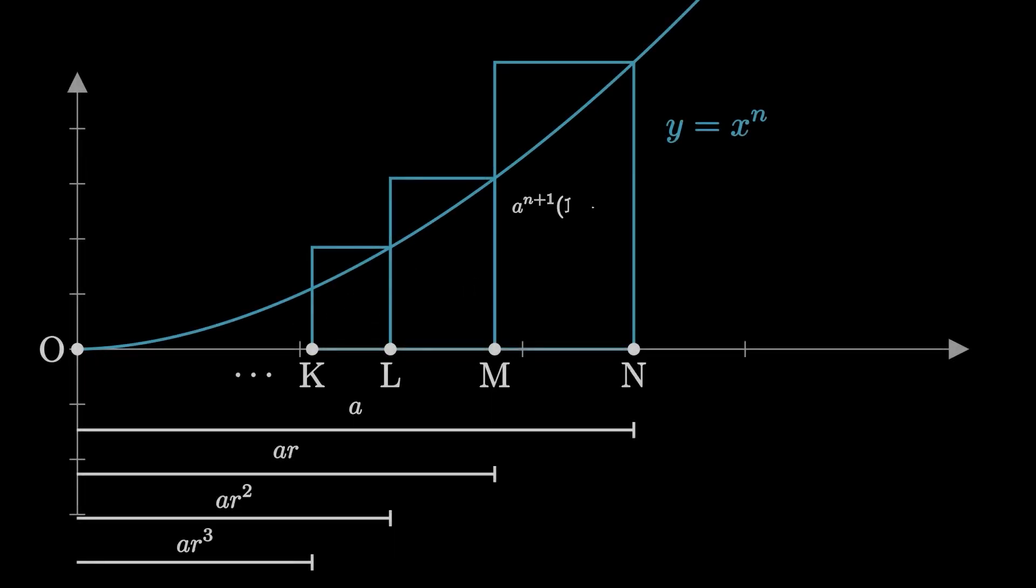Now, our initial value is the area of the first rectangle, a to the n plus 1 times 1 minus r. So then, what's our common ratio between the rectangles? Well, let's look at the next rectangle, between l and m. The base is ar minus ar squared, or ar times 1 minus r. The height is ar to the n.